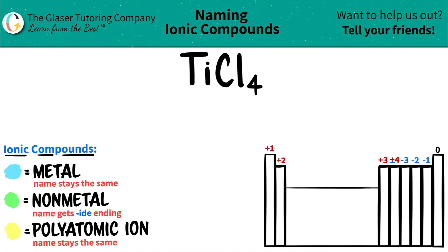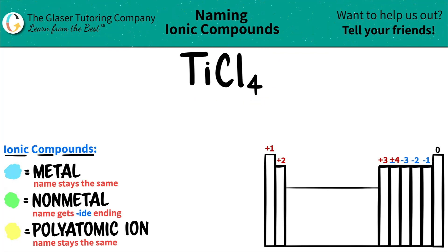Today we are going to be naming the ionic compound TiCl4. So we have two elements here — we have titanium, which is Ti, and chlorine, which is Cl. Let's find out where they are on the periodic table so we could name them either a metal or a non-metal.